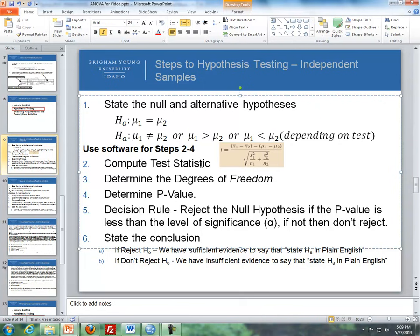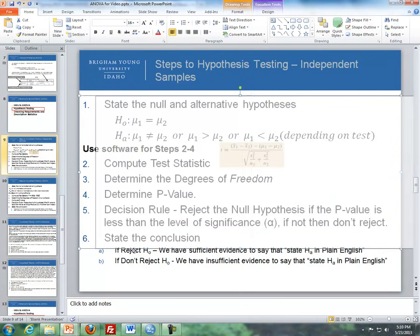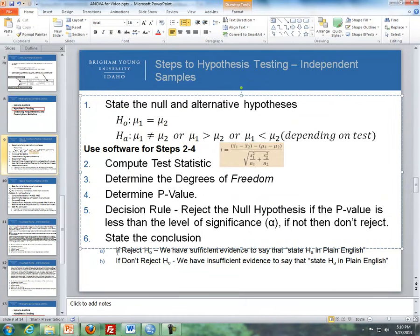The test statistic is computed using software. Here's the formula for it, but you'll be using either SPSS or Excel. We also get degrees of freedom and the P value from software as well. With the next step, after we get the P value, we compare it to the level of significance. We reject the null hypothesis if the P value is less than the level of significance. If not, then we don't reject. Then we state our conclusions. If we reject the null hypothesis, we have sufficient evidence to say that, and then state the alternative conclusion. If we don't reject the null hypothesis, we have insufficient evidence.